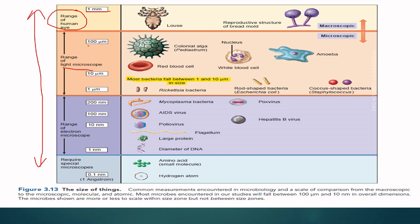The light microscope range is 1 micrometer to 100 micrometers. All the microorganisms we can see by light microscopes fall in this range. In the 100 micrometer range we can see colonial algae like amoeba, and in the 10 micrometer range we can see red blood cells and white blood cells. Most bacteria fall between 1 and 10 micrometers in size.